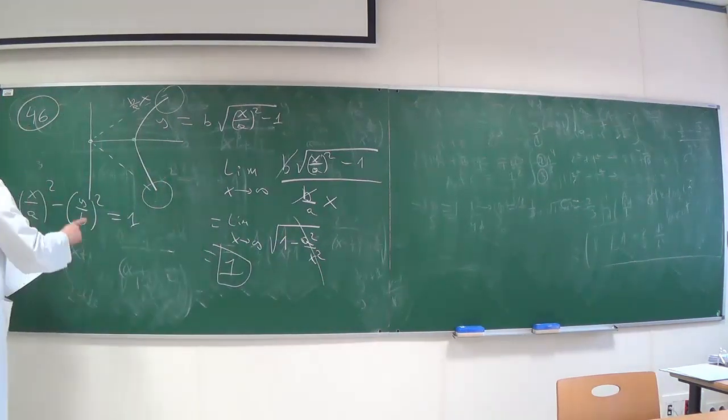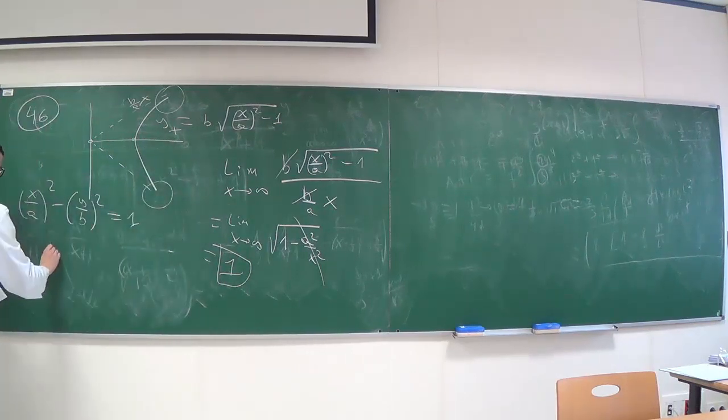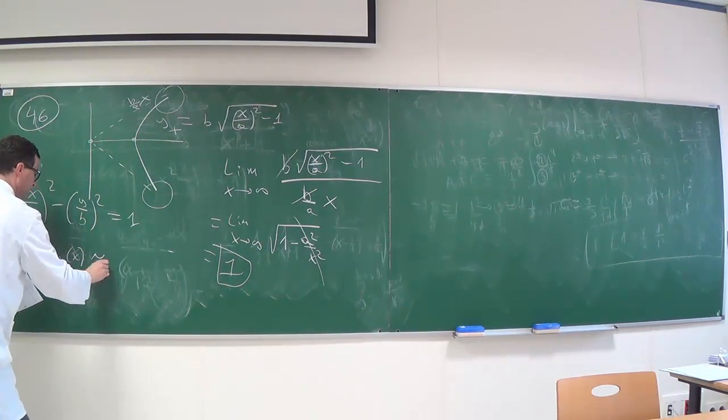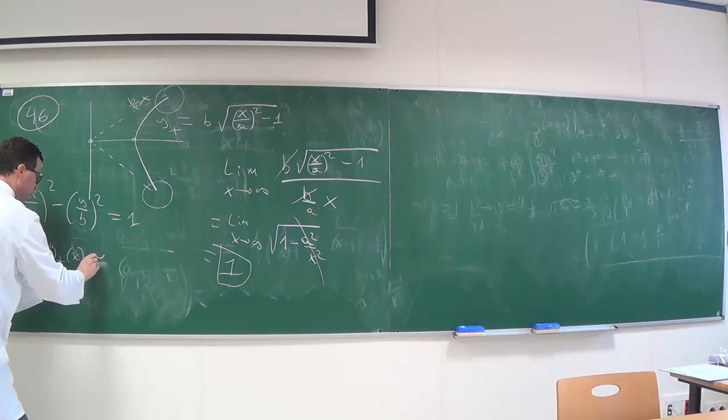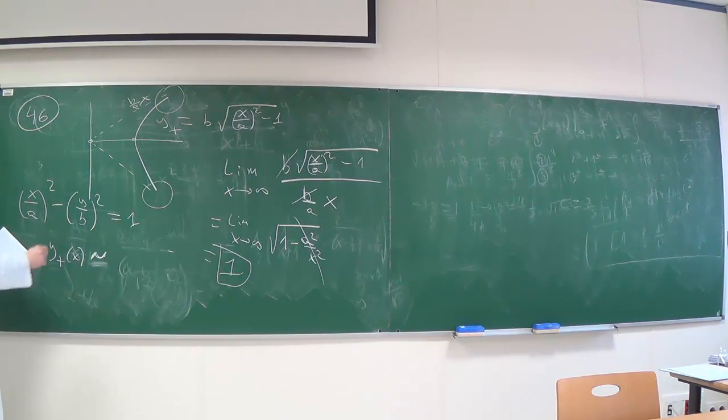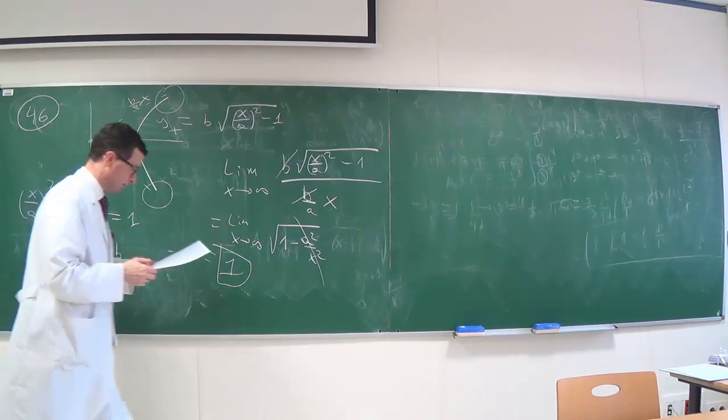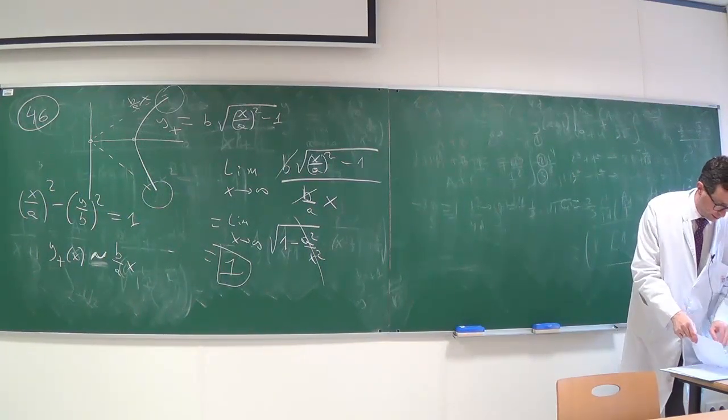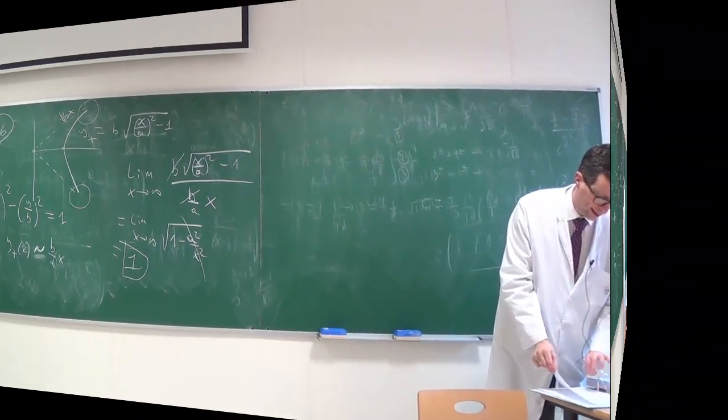And we can say that this branch of the hyperbola y plus is asymptotically equivalent, which we denote with this tilde placed in the middle of the equation, to b divided by a times x. Well, we have a twin problem to this one, which is to calculate the area between the hyperbola and its asymptote. It is problem 47.